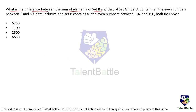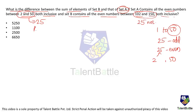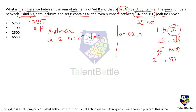Sample Q5 — Sets: Set A contains all even numbers between 2 and 50 (inclusive); Set B contains all even numbers between 102 and 150 (inclusive). Both sets have 25 numbers each, forming arithmetic progressions with common difference 2. Set A: first term = 2, n = 25, d = 2. Set B: first term = 102, n = 25, d = 2. We need the difference between the sum of Set B and the sum of Set A.